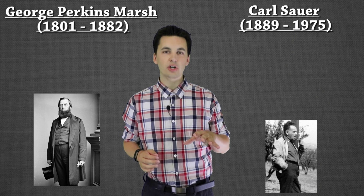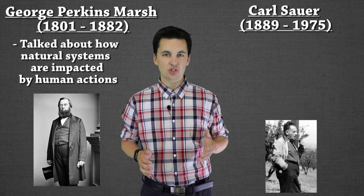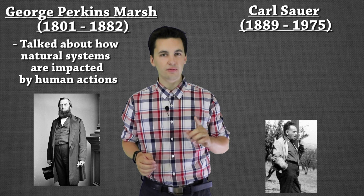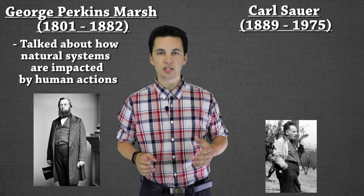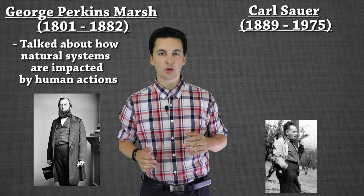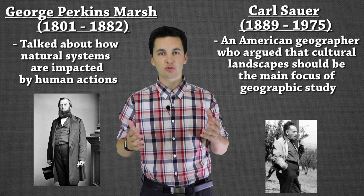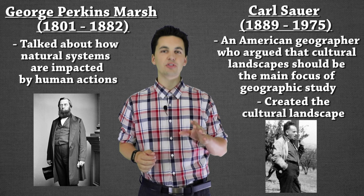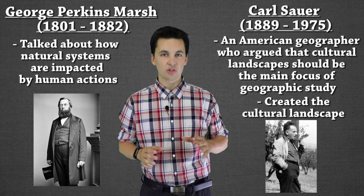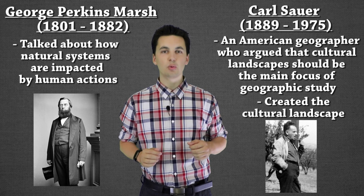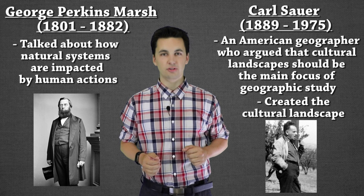In the 1800s geography started to change even more. We have George Perkins Marsh, who started the conversation that natural systems were actually impacted and influenced by human actions — that there was a back and forth between the environment and society. We also have Carl Sauer, an American geographer, who talked about the concept of the cultural landscape and was one of the first to actually create that term. He believed the cultural landscape should be the main study of human geography. Cultural landscape is going to be one of our big concepts — it'll come up in almost every unit throughout the whole year, so that one is definitely important to understand.